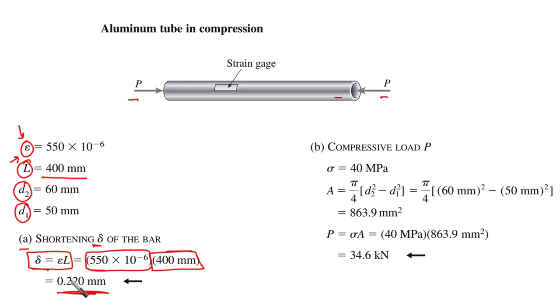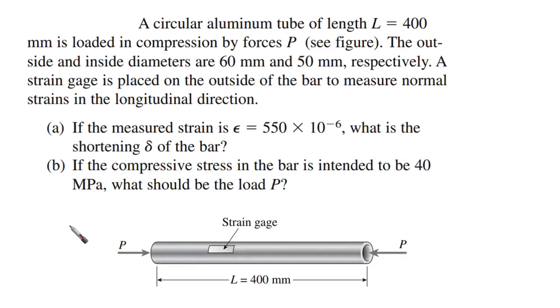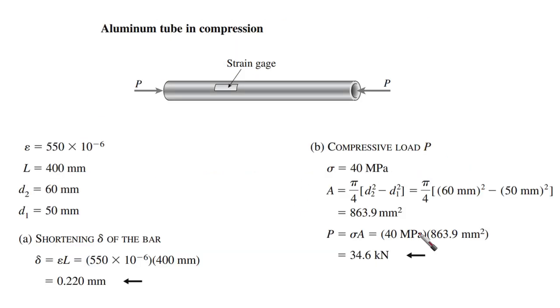For the compressive load P that is required in the second one: if the compressive stress in the bar is intended to be 40, we want to control it to be 40 megapascals, what should be the load P in this case?